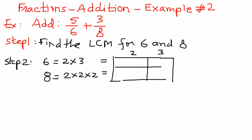We have a 2 here and a 3 here — 2 times 3 is equal to 6. And in 8, we have three 2s: 2 times 2 times 2, and we don't have any 3s in this prime factorization.